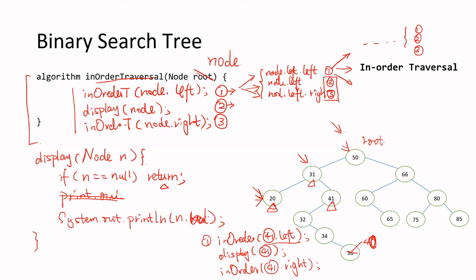For the first recursive call on node.left, the algorithm knows to stop once it hits a null node — because at that point the display helper returns immediately. You need to understand this, especially if you didn't learn recursion before. You must be good at recursion because it covers almost half of what you can do. Everything is either iterative or recursive.